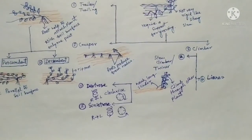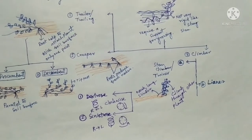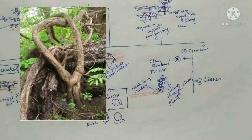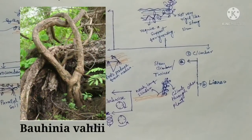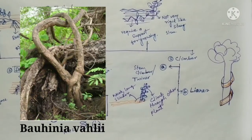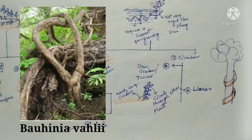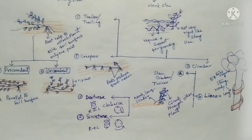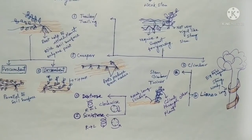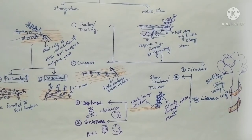The next type is liana type climber. These plants are very long and very woody. They are perennial and they climb through long trees. They are mainly found in forest areas, where big trees support their proper growth because lianas are very strong and woody type plants.